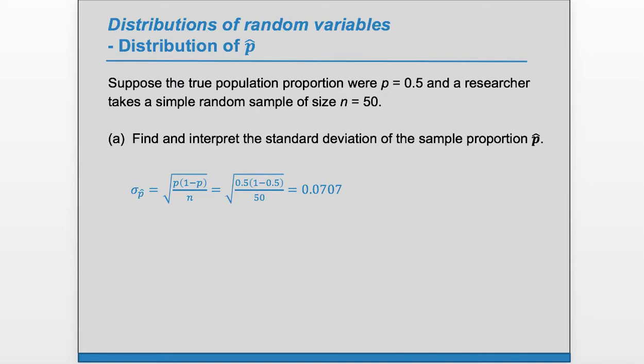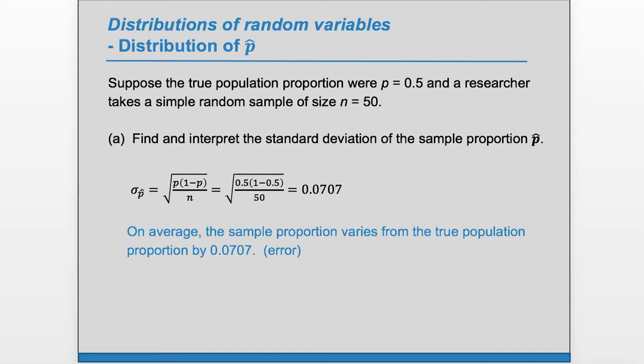What do we mean by the standard deviation? How do we interpret it? We know that p hat will vary from sample to sample because we're taking random samples of size 50 from a population. How much is it likely to vary? This standard deviation tells us about that. Additionally, we can interpret this standard deviation as error - the average error in our sample proportion from the true value. On average, the sample proportion varies from the true population proportion by 0.0707. This is how much error we can expect in our sample estimate.